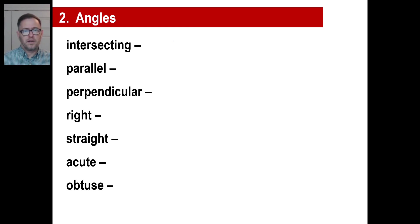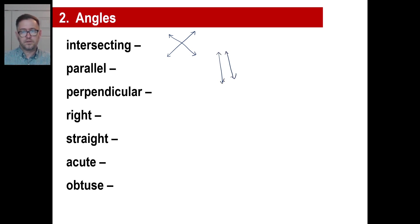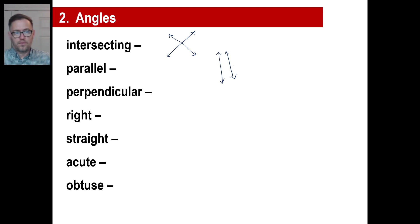Intersecting lines look like these — they create angles. Intersecting means they cross each other. Parallel means lines that are parallel to each other — they never will touch. Parallel lines do not ever touch.